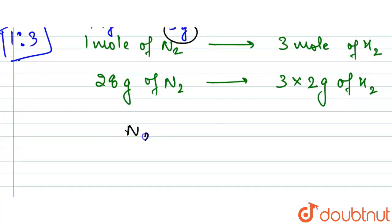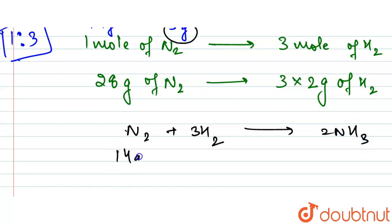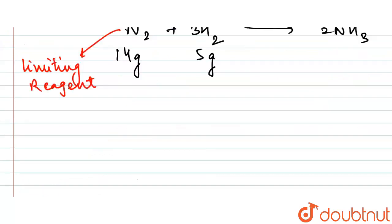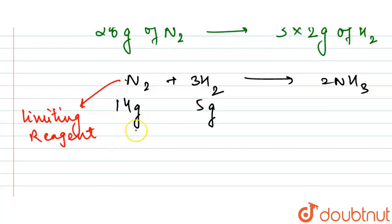In the reaction N₂ + 3H₂ → 2NH₃, with 14 grams of N₂ and 5 grams of H₂, N₂ is the limiting reagent. The limiting reagent tells us the amount of reactant that is fully consumed and determines the amount of product formed.